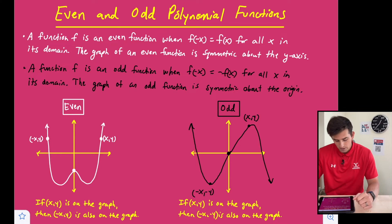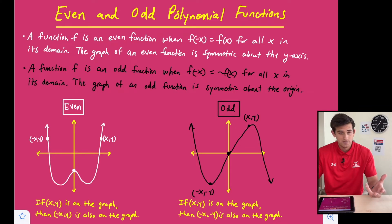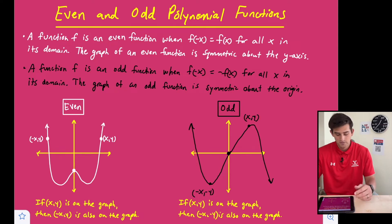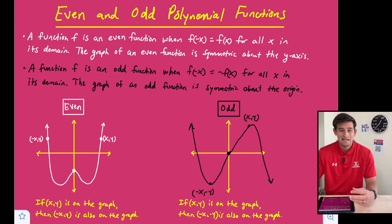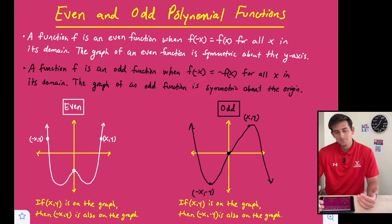A function f is an odd function when we substitute negative x in again, but now we get the opposite of f of x once we simplify, for all x in its domain. The graph of an odd function is symmetric about the origin. So again, two determining factors: plug in the opposite of x, and if we get the opposite of what we started with, then it's odd. Or if the graph is symmetric about the origin, then it's odd.